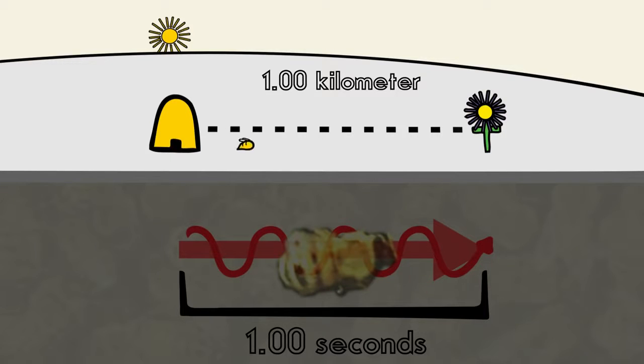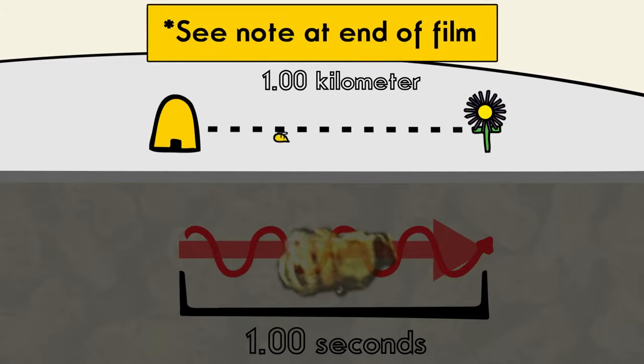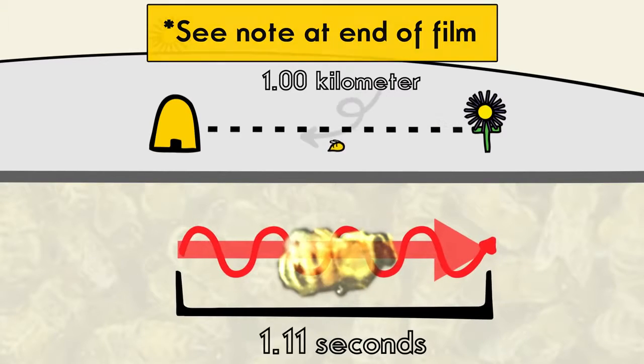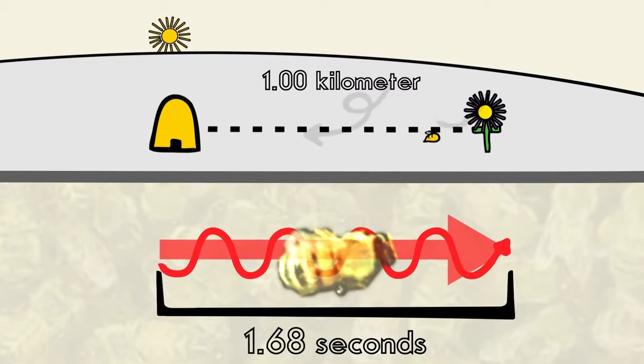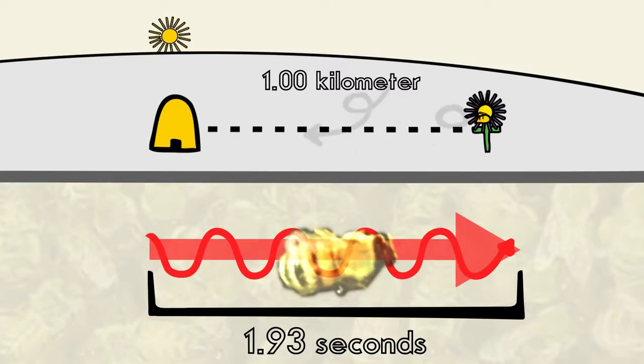For bees, distance is actually measured by the amount of energy it takes them to travel. Thus, a strong headwind could cause a bee to dance as if the food came from a further distance away.